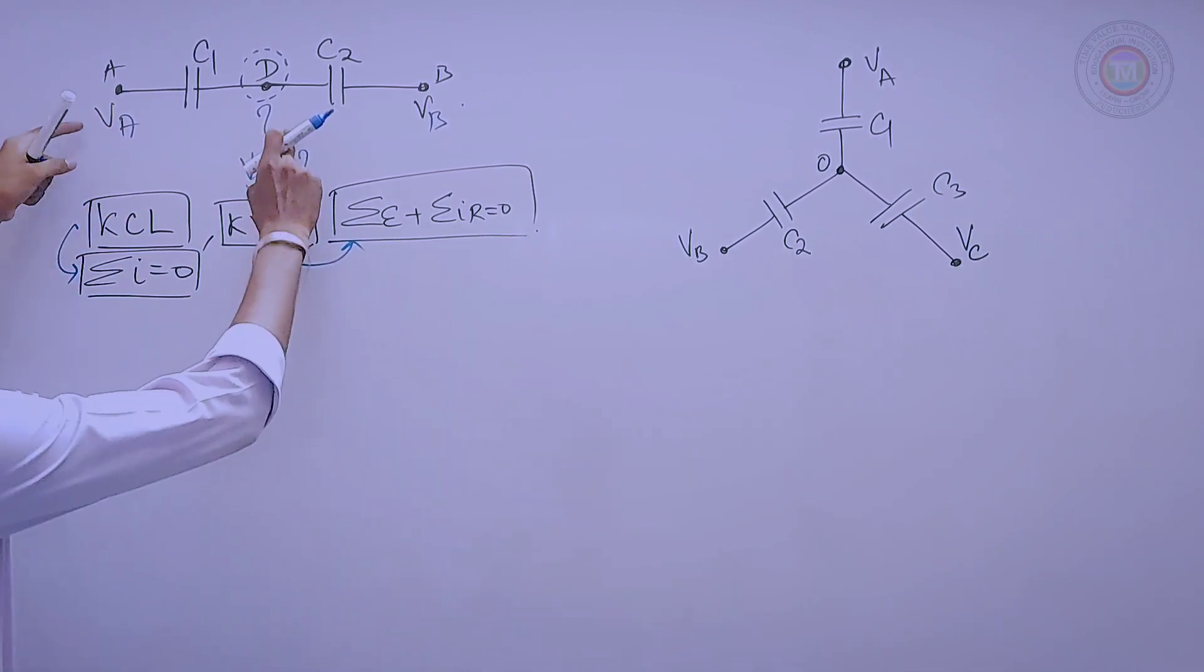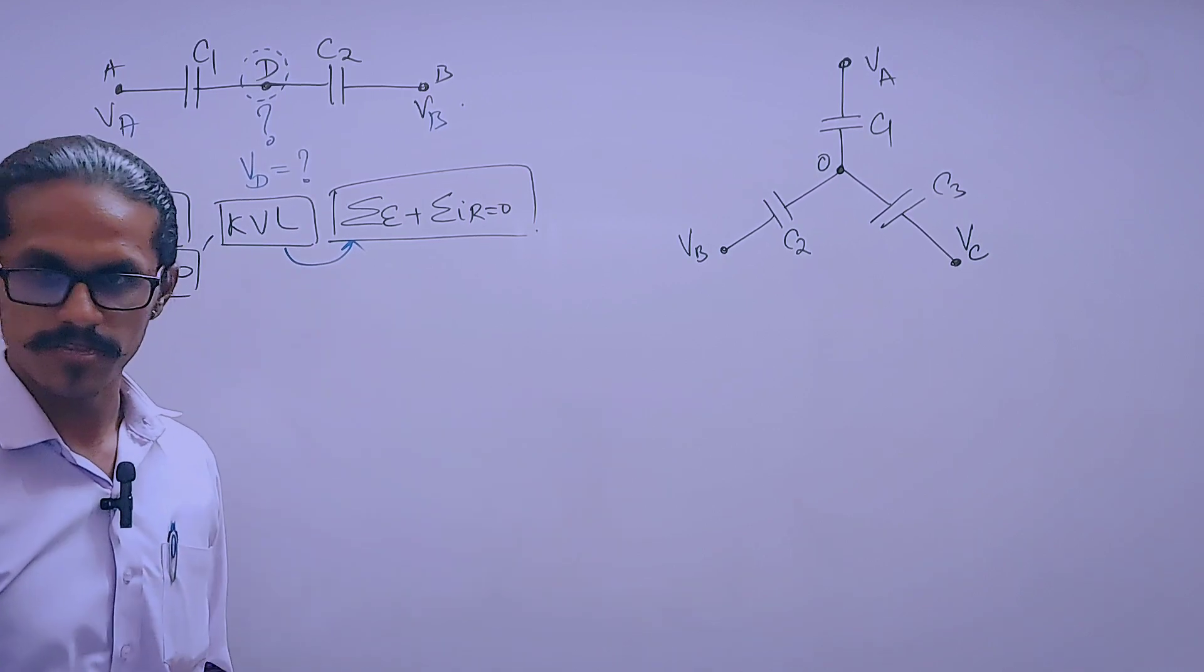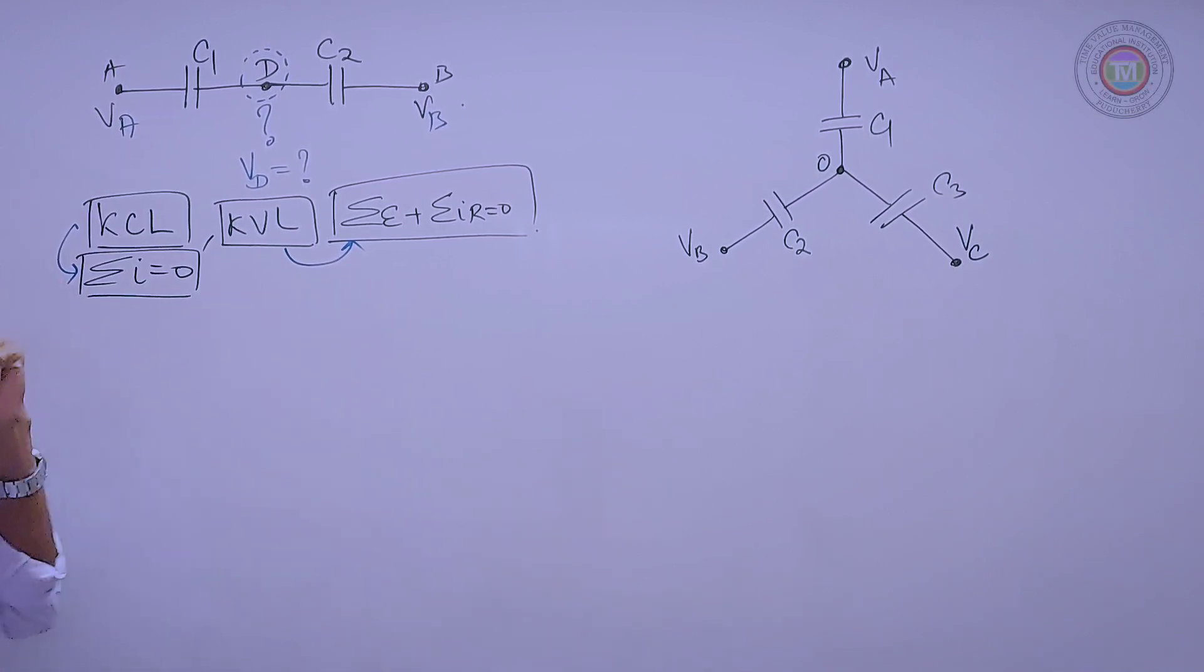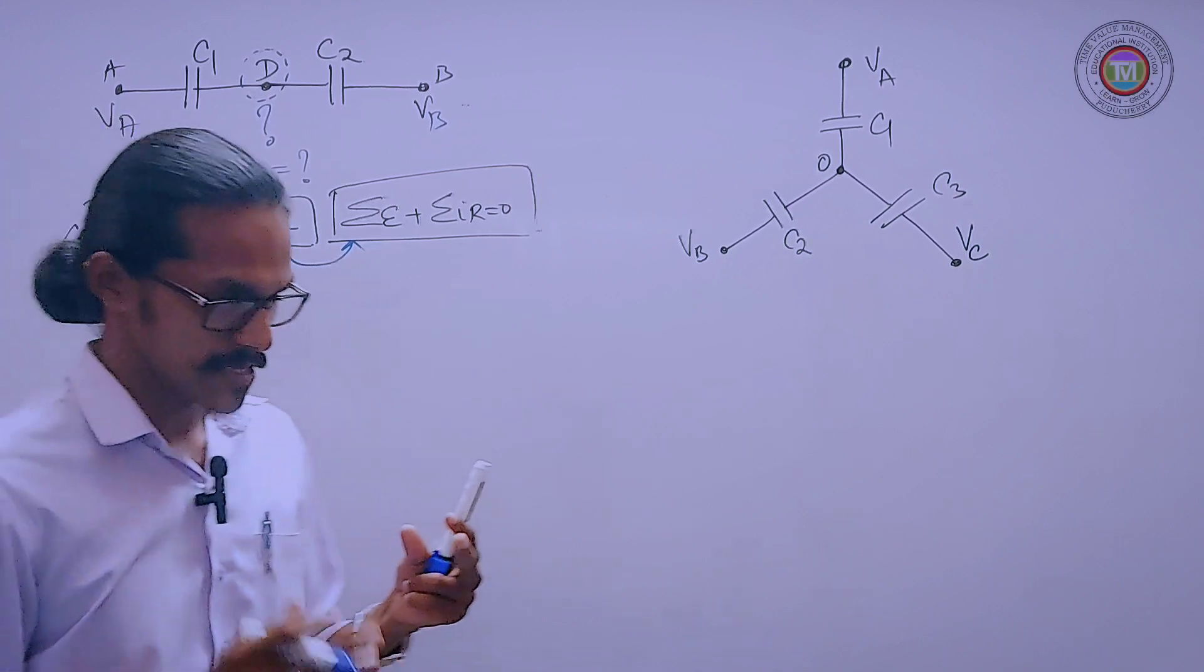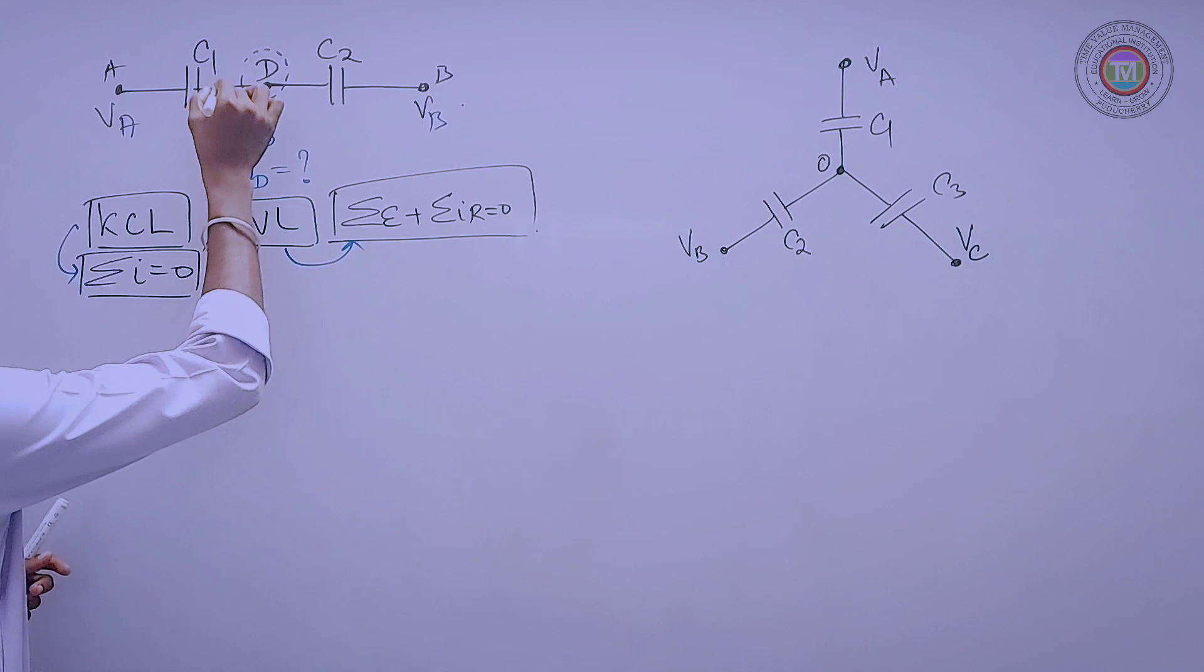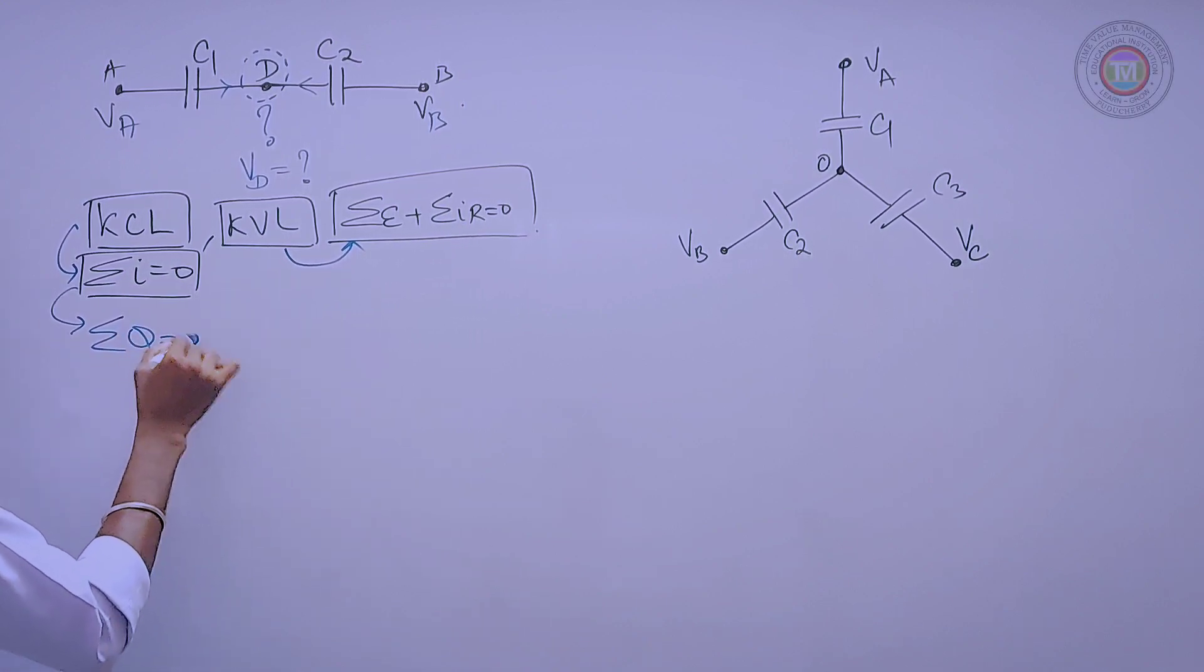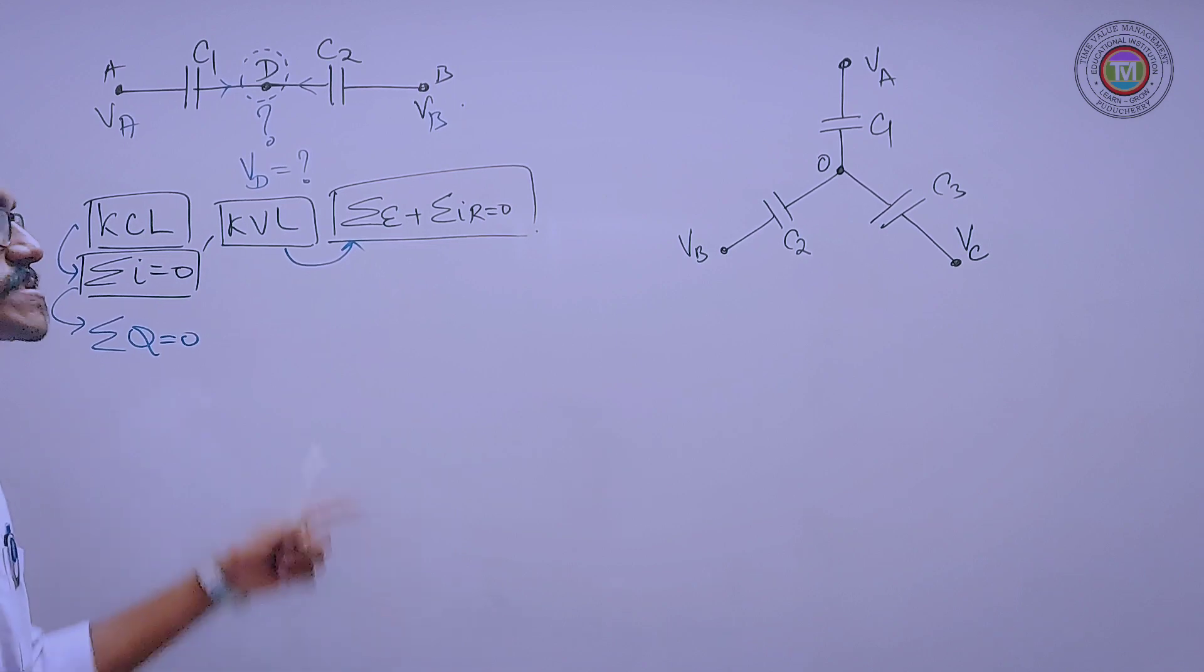So we will consider the potential of this point is said to be D. In this case, charges are appearing at the junction. Some of the current is said to be zero, which implies that sum of the charges is also zero.